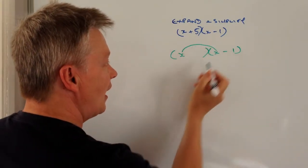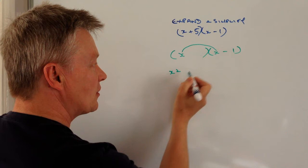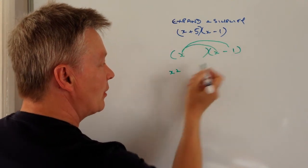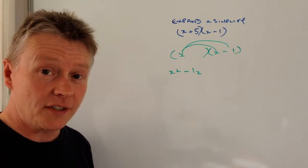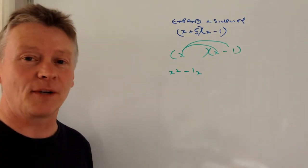The first one is going to be X times X, which is X squared. The next one is going to be minus 1X.